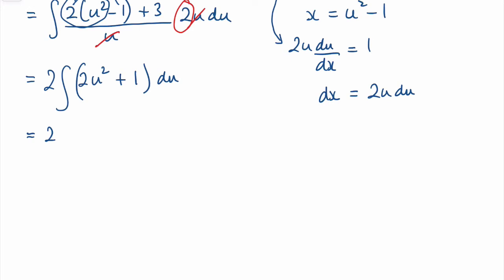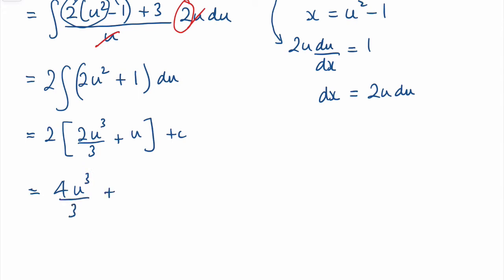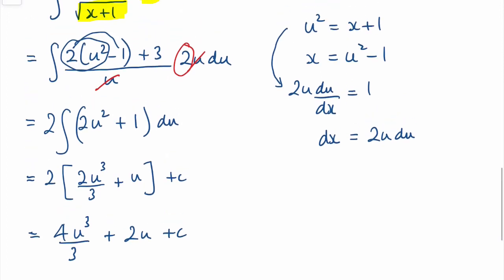Let's go ahead and integrate that. I've still got the 2 out front. Integrating 2u squared gives 2u cubed over 3, and integrating 1 gives u, plus a constant of integration. Expanding the brackets gives 4u cubed over 3 plus 2u plus the constant of integration.